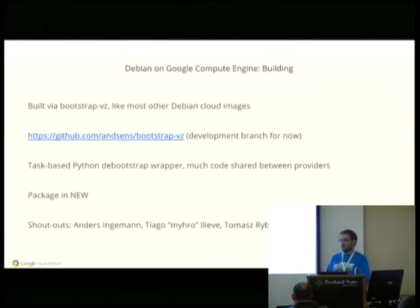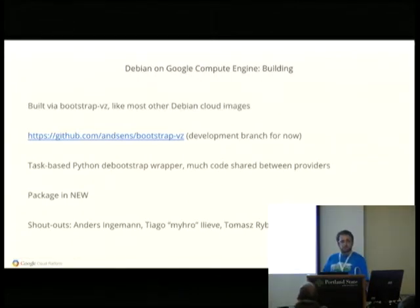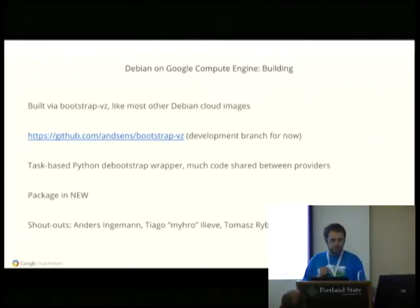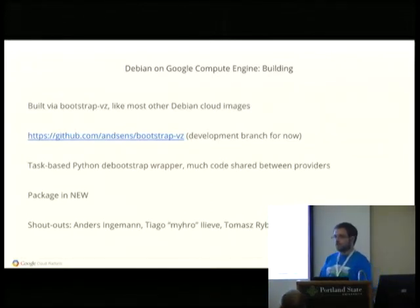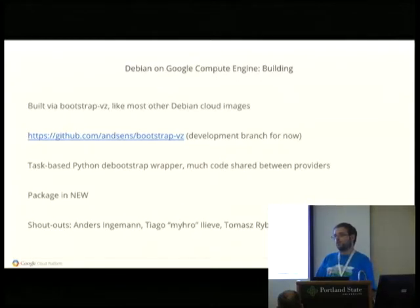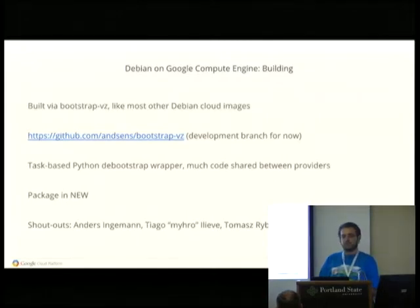We build virtual machine images for Debian similarly to how you would do it for KVM or Amazon EC2 or Windows Azure. We use a tool that is on GitHub — we are not upstream. Some folks in the Debian community are upstream of this tool called Bootstrap VZ. Originally, Debian built Amazon EC2 images based on a tool called EC2 Build Debian AMI, which was adapted from something called EC2 Ubuntu.